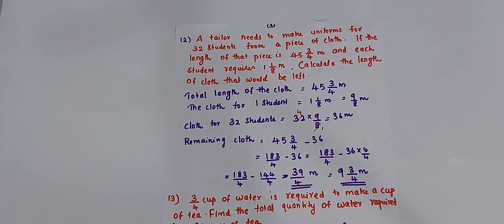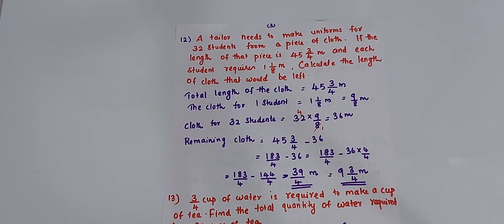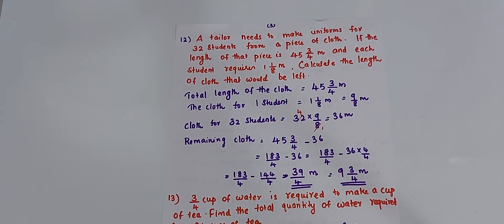12th question: a tailor needs to make uniforms for 32 students from a piece of cloth. The total length of the cloth is 45 and 3 by 4 meters and each student requires 1 and 1 by 8 meters. To find how much cloth is needed for 32 students, multiply 1 and 1 by 8 by 32. After multiplying, you get 36 meters. So, 36 meters are needed to make uniforms for 32 students.